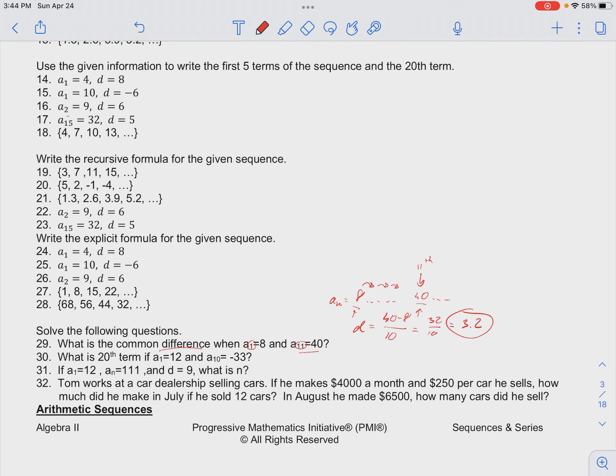And we can make sure that this is correct. So if we make an explicit formula for this sequence, we have a of n is equal to 8, our first term, plus n minus 1 times 3.2. If we plug in 11, we should get out 40.